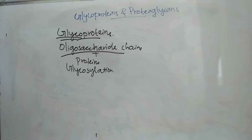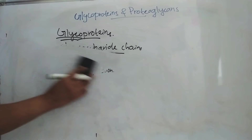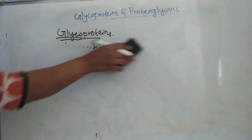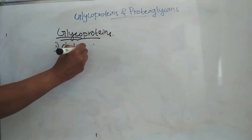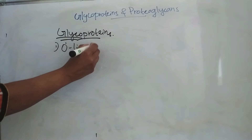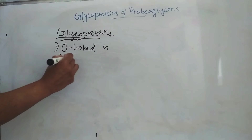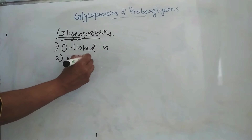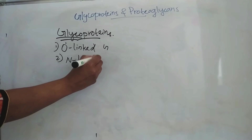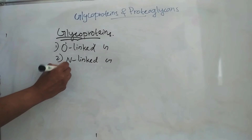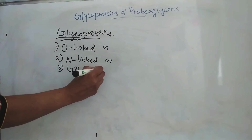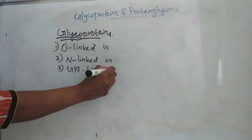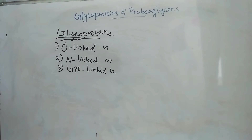Major classes of these glycoproteins include: first, O-linked glycoproteins; second, N-linked glycoproteins; and third, GPI-linked glycoproteins. These are the major classes of glycoproteins.